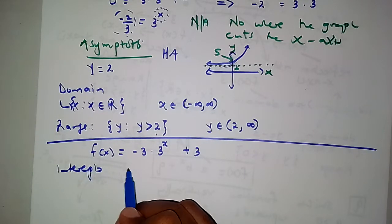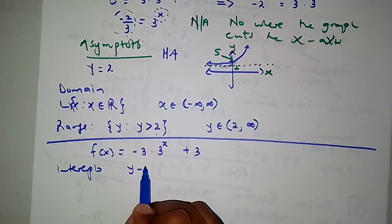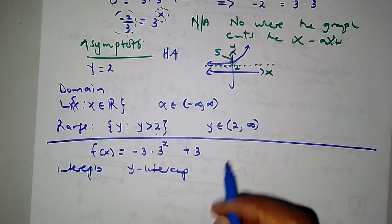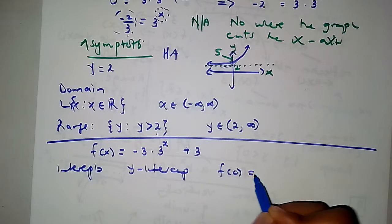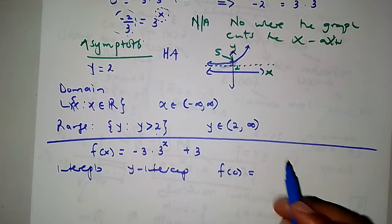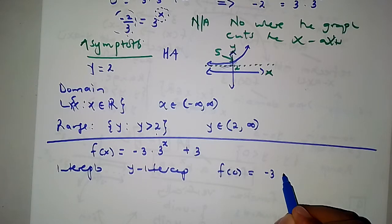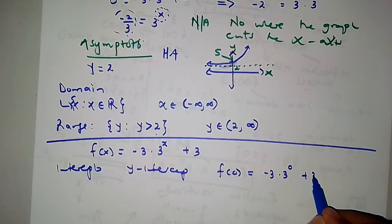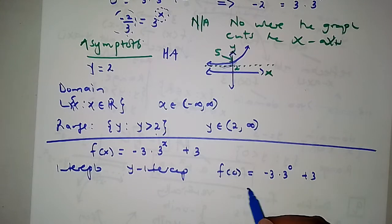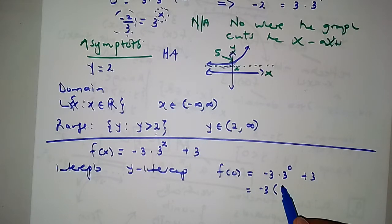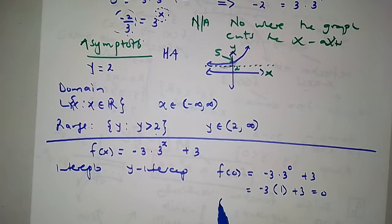For the y-intercept, f of 0 equals negative 3 multiplied by 3 to the power 0 plus 3. That's negative 3 times 1 plus 3, which equals negative 3 plus 3, which is 0. So the y-intercept coordinate is (0, 0).